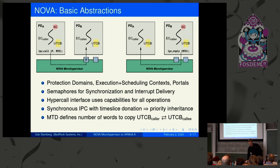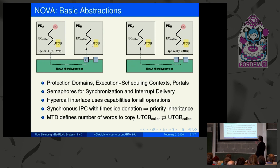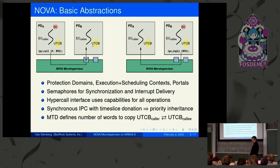Once the call is made, the scheduling context is transferred to the callee, achieving priority inheritance. The callee can execute because it has a time slice, and time is accounted to the caller. At some point the callee invokes IPC reply, provides a message transfer descriptor specifying how many words to copy back, and we return to the caller. This is the basic mechanism by which protection domains and threads communicate with each other.